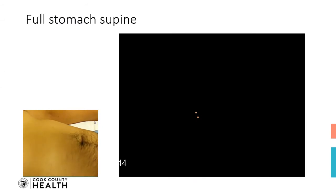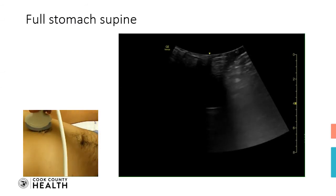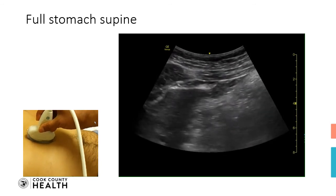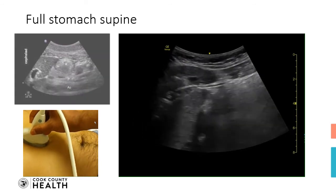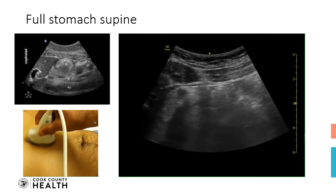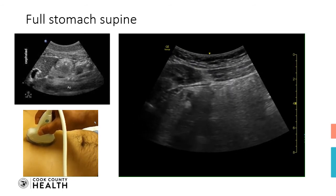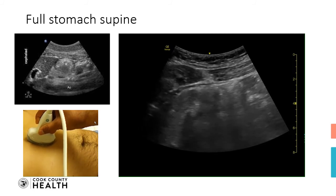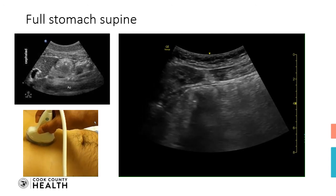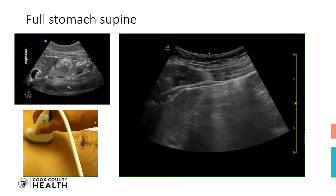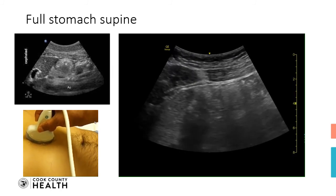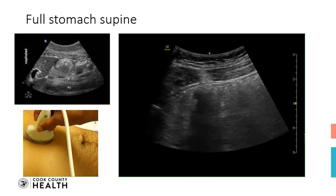Now we are going to scan a patient who just had some food before scanning. There you can see the antrum, and you can see it is a heterogeneous structure now — mixed with liquid and solid particles. This patient is also a full stomach patient and a contraindication for general anesthesia. Any patient who had a clear liquid more than 1.5 ml per kg, or had a thick fluid or solid food before anesthesia, is a contraindication.